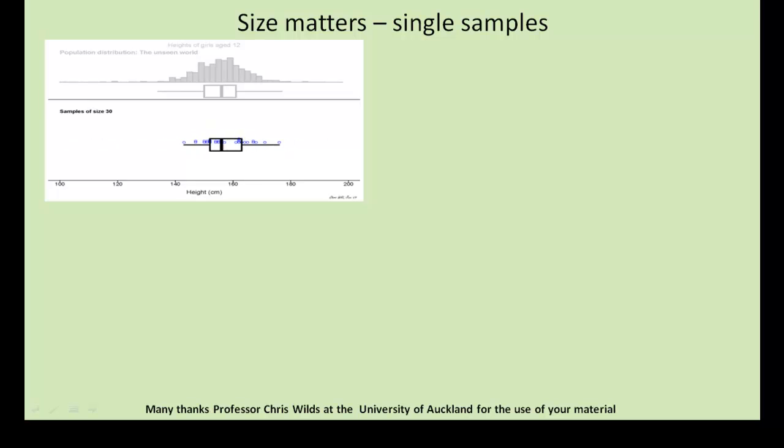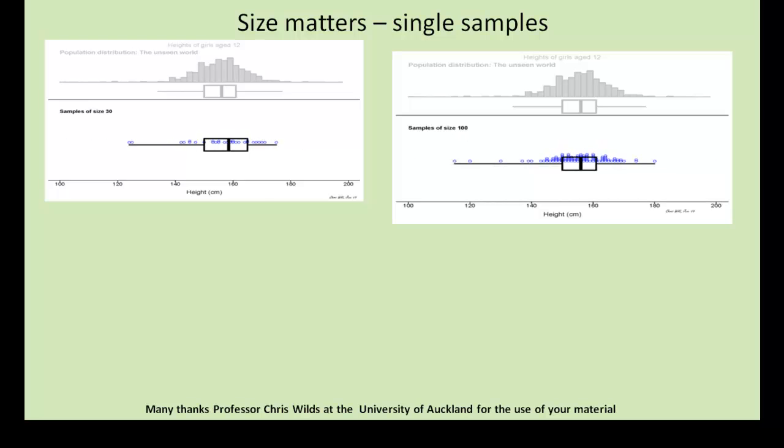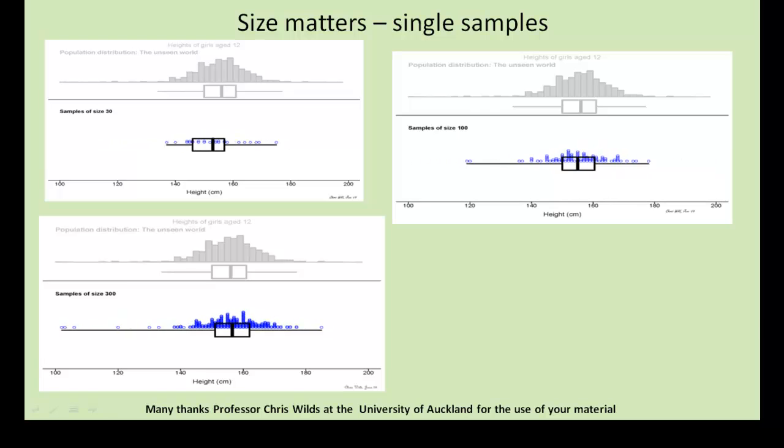Here is the result if we take repeated random samples of size 30. Notice how it's jittering around quite drastically. But taking sizes of 100, it seems to move less. And with sizes of 300, it appears that the variability of the estimated sample means is even less, more stable.